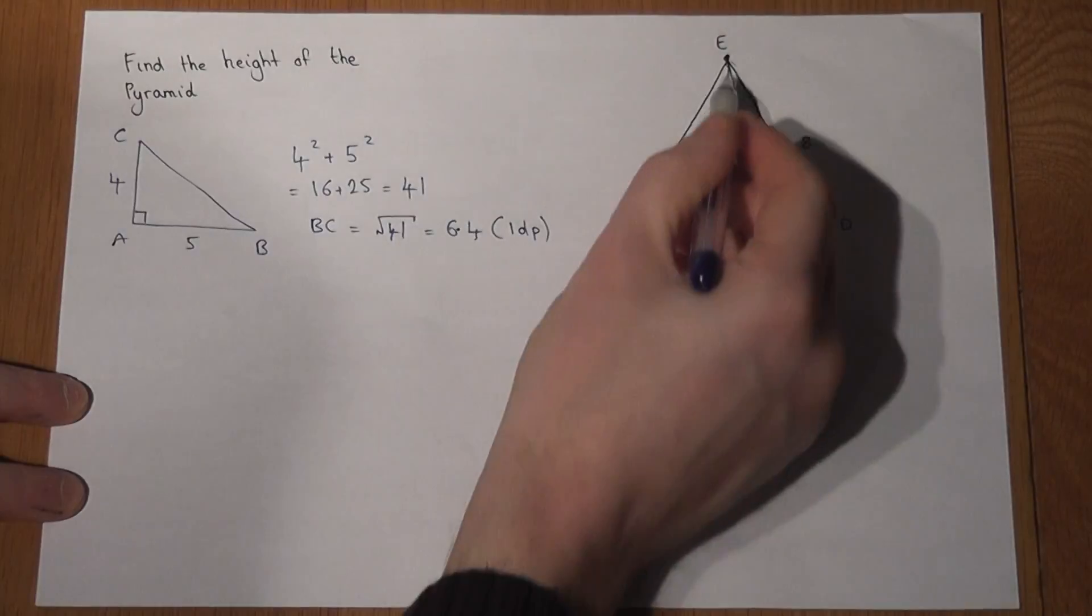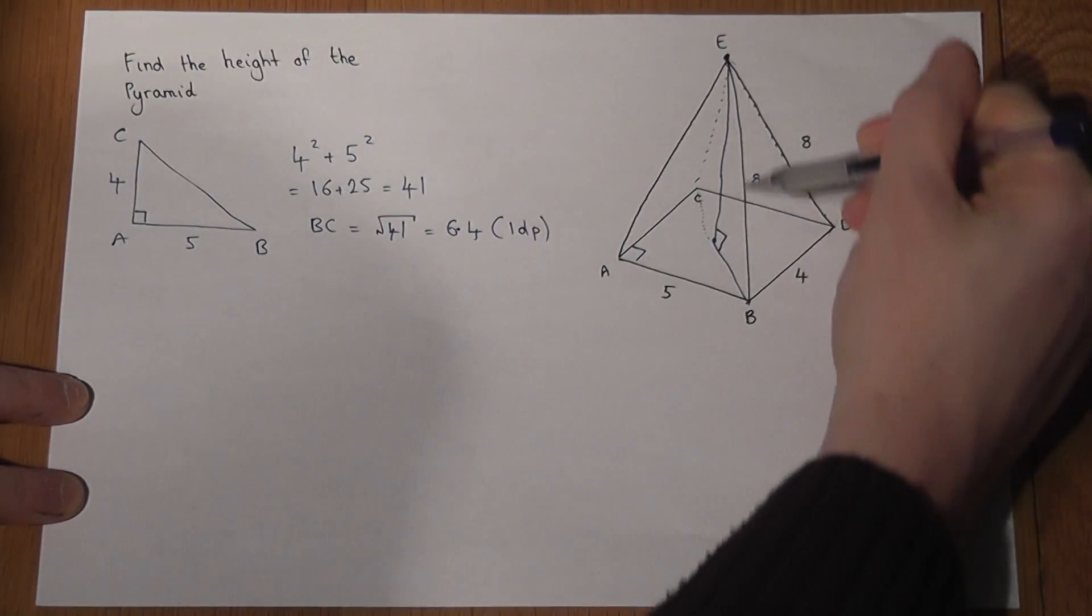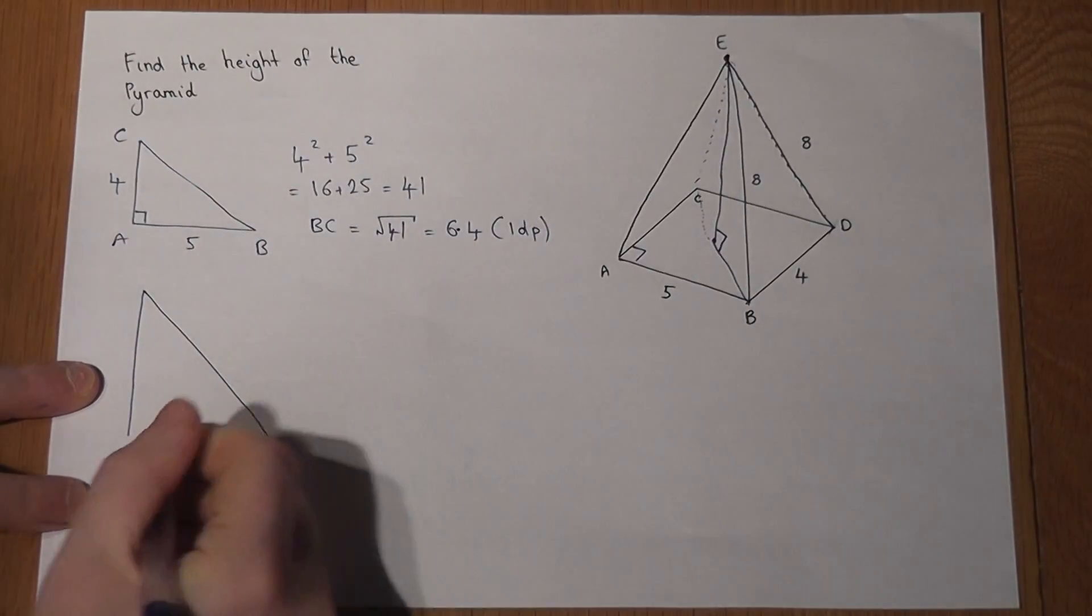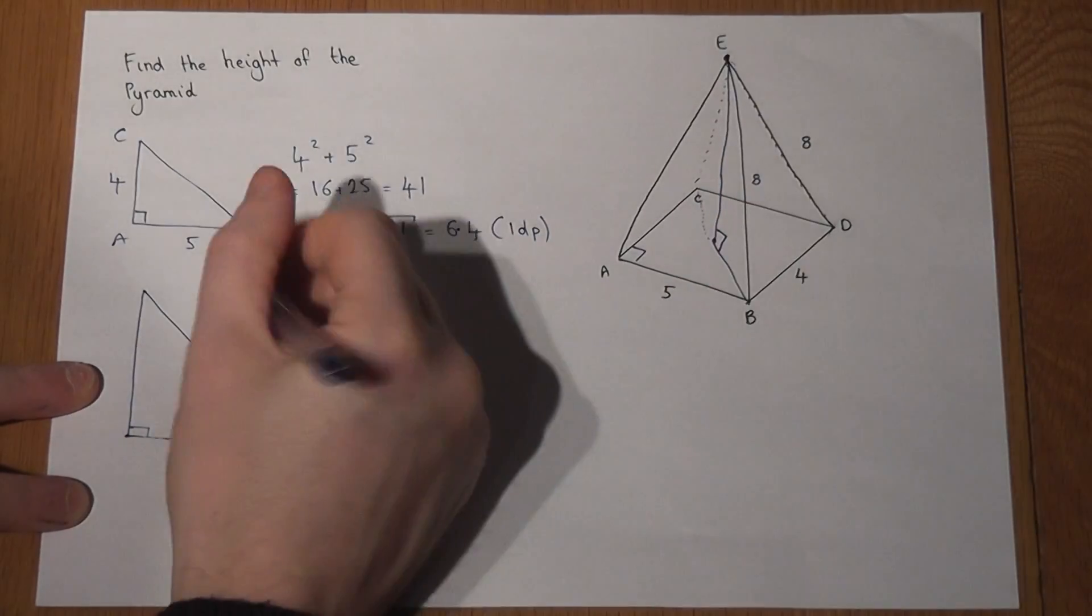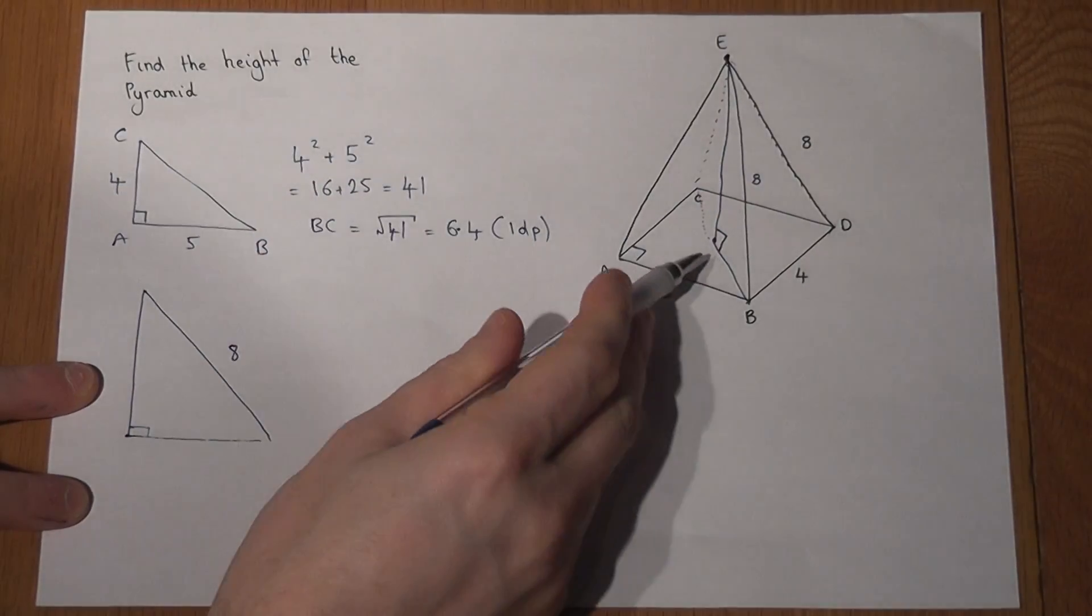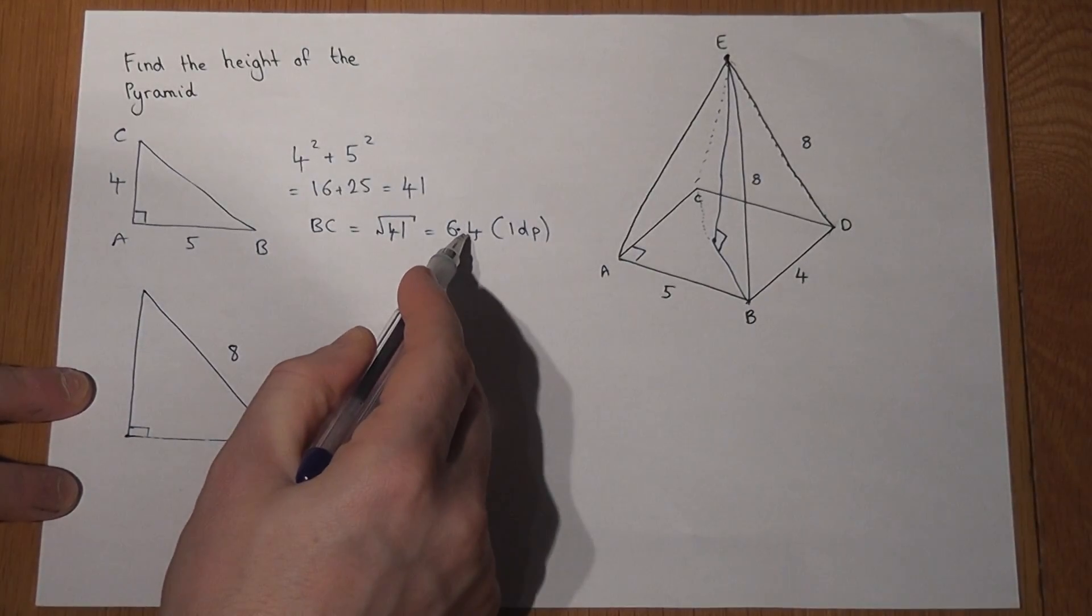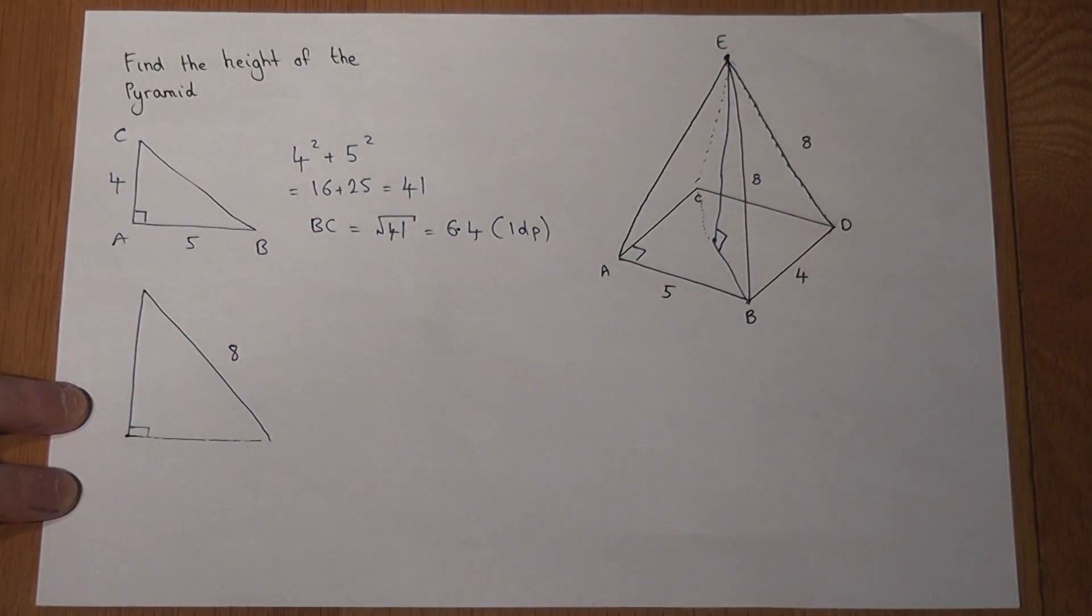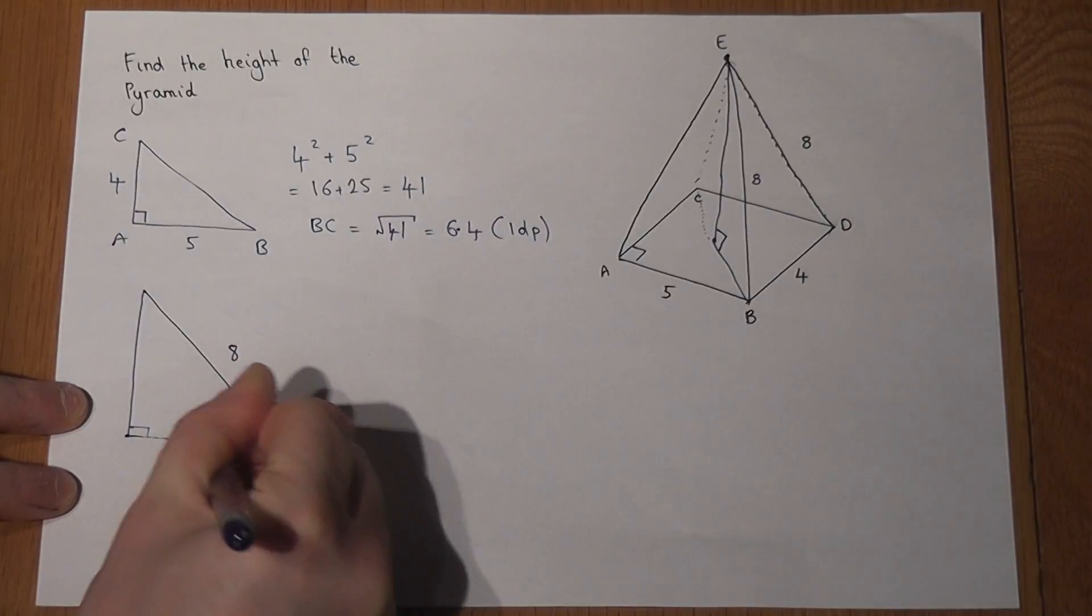Now to find the height of the pyramid, I'm going to draw out this right-angled triangle here. We know the slant length is 8. This length here from the center to B must be half of the whole length across. So if I divide that by 2, then that is 3.202.